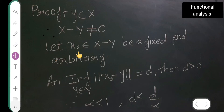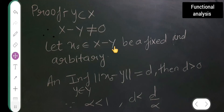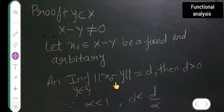Let x₀ belong to X minus Y — bring one element x₀ and say it belongs to X minus Y, and let this be fixed and arbitrary. After that, take the infimum over y belonging to Y of the norm of x₀ minus y, and set this equal to d.